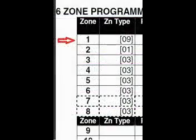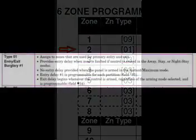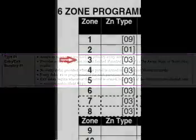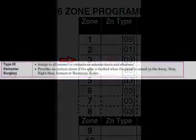Zone type 9 is a supervised fire loop. Supervised means it has to have an end-of-line resistor, and it's currently looking for heat or smoke detectors. Zone 2's default is zone type 1, which is used for the door you use for entering and exiting the house — it has its own zone type because you want to be able to assign entry and exit delays to this zone. The default value for the remaining zones, 3 through 8, will be zone type 3, which correlates to your perimeter — things like window reed switches and glass breakage detectors.